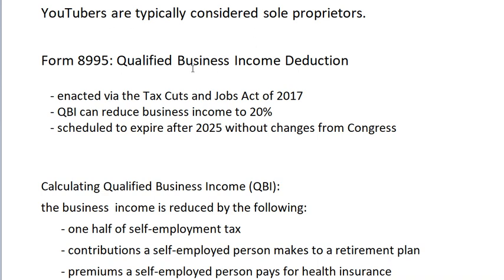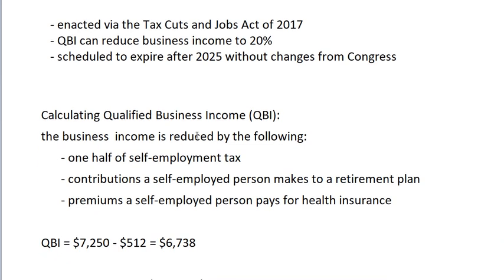So what is the qualified business income deduction? It was part of the Jobs Act of 2017. The qualified business income deduction, or QBI deduction, allows us to reduce business income by up to 20 percent. The QBI deduction is scheduled to expire in 2025 without changes from Congress.